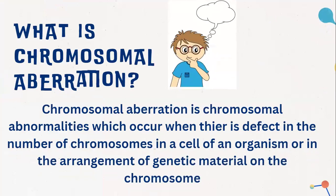Chromosomal aberration refers to chromosomal abnormalities which occur when there is a defect in the number of chromosomes in a cell of an organism, or in the arrangement of genetic material on the chromosome. Any such abnormality is called chromosomal aberration.